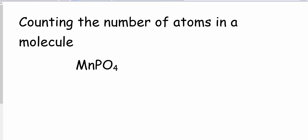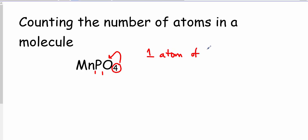Let's do some examples that become increasingly more complex, starting with simple ones. Here we've got manganese phosphate. There's a subscript four, but we need to be careful — there are no brackets around the PO₄. All subscripts refer only to the element they follow. There's an imaginary one after Mn and an imaginary one after phosphorus. The four only refers to the oxygen. So I have one atom of manganese, one atom of phosphorus, and four atoms of oxygen.